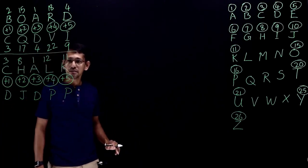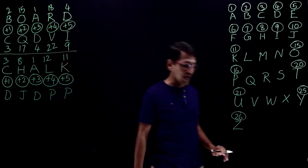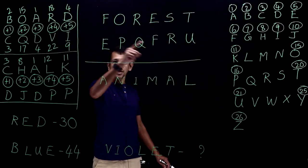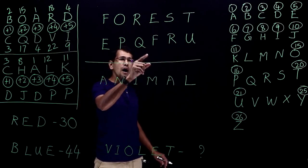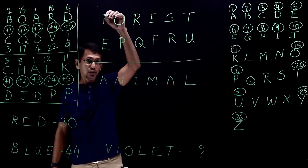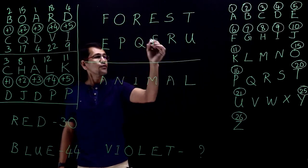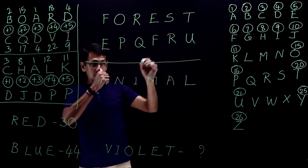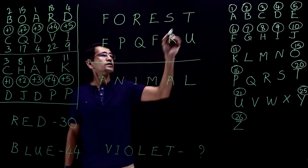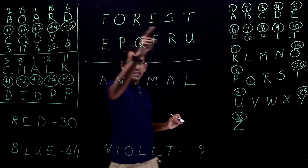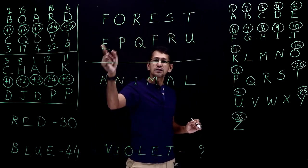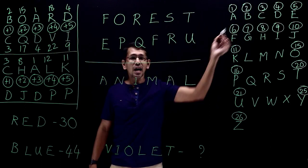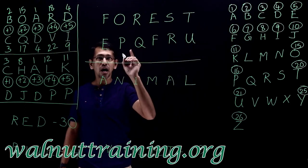Let's take another example: FOREST is coded as EPQFRU. We check — do we have F? Yes. Do we have O? No. Do we have R? Yes. Do we have E? Yes. Do we have S? No. Do we have T? No. Not all the letters in the word appear in the code, so it is not a rearrangement.